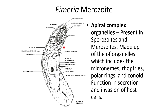Here's a more detailed image of the merozoite. The apical complex organelles are present at the anterior end and are present in both sporozoites and merozoites. These organelles include the micronemes, the rhoptries, the polar rings, and the conoid — all of which function in secreting proteins that help invade the host cells. The apical complex organelles together form an organelle known as the apicoplast, which epicomplexans have. It's also known as a plastid, helps in metabolism and invasion of the host, and is believed to have been formed through endosymbiosis.